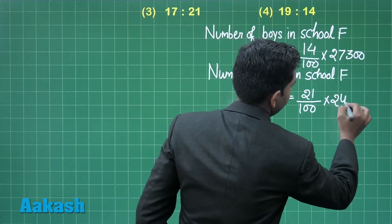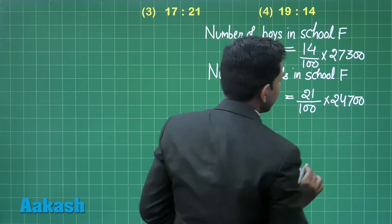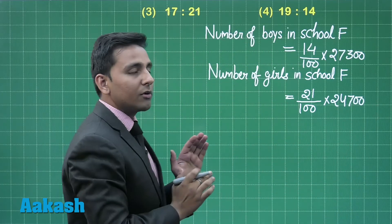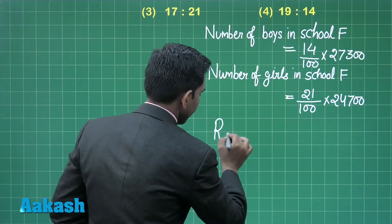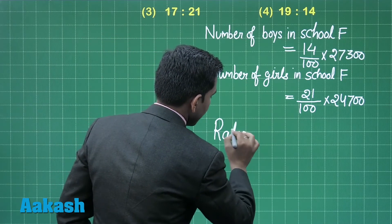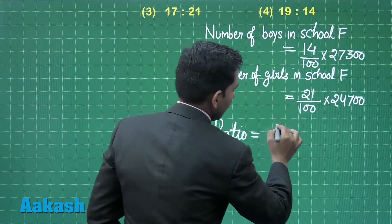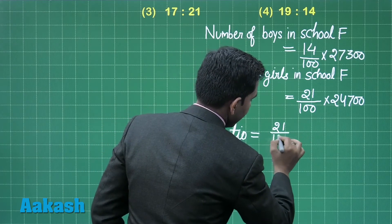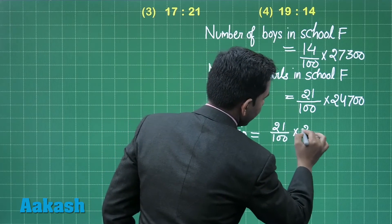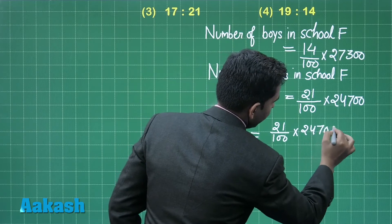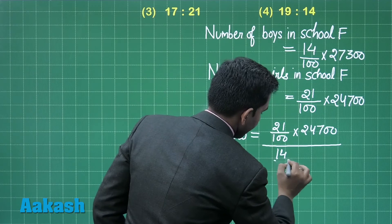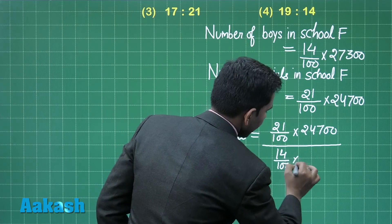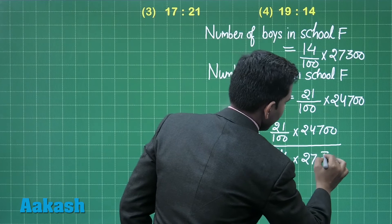The required ratio equals 21 divided by 100 multiplied by 24,700, and the whole divided by 14 divided by 100 multiplied by 27,300.